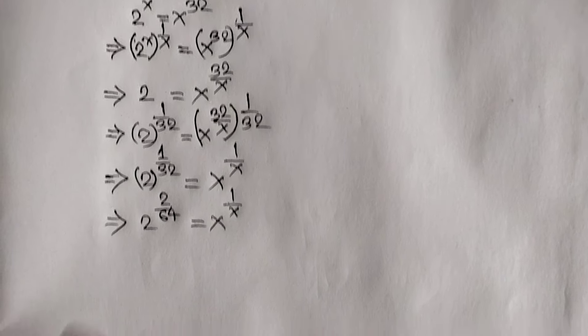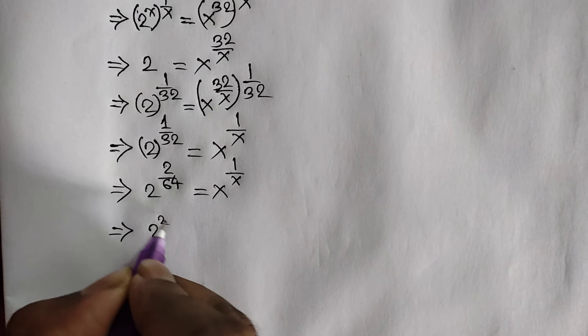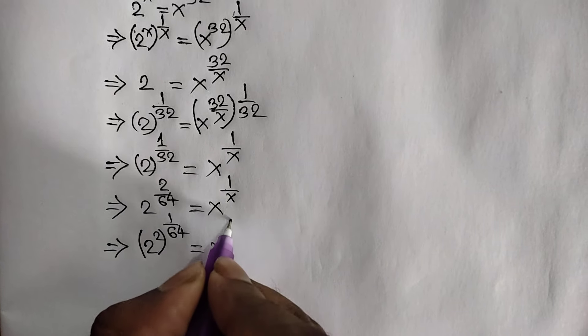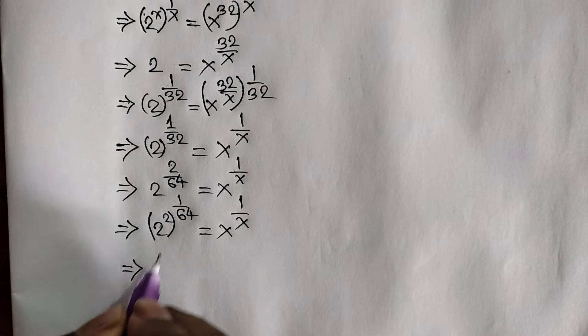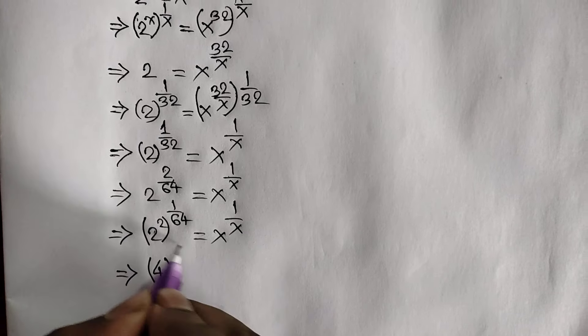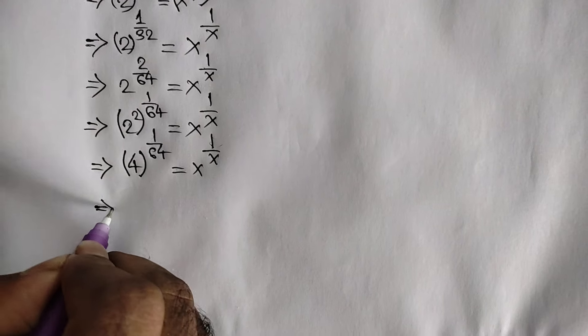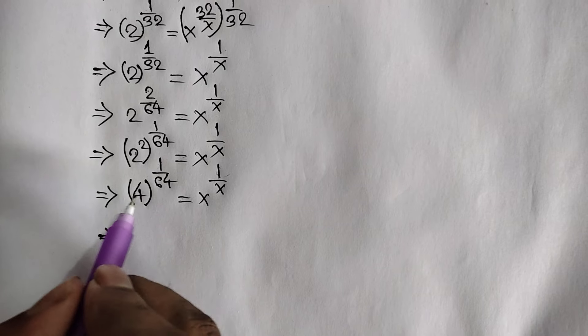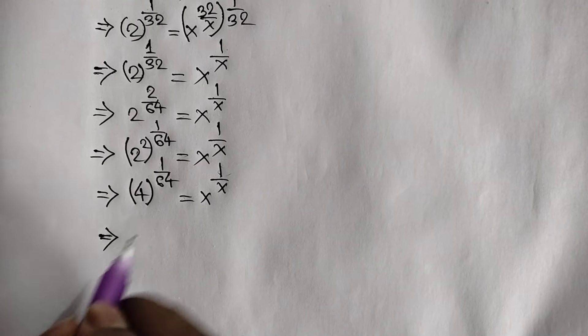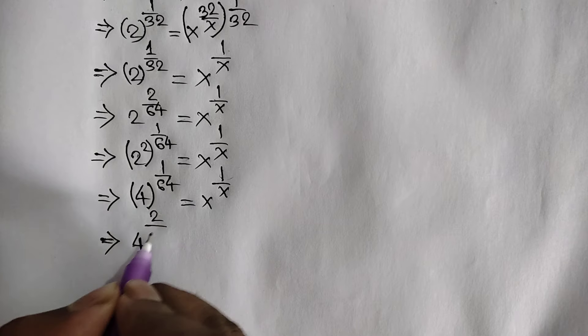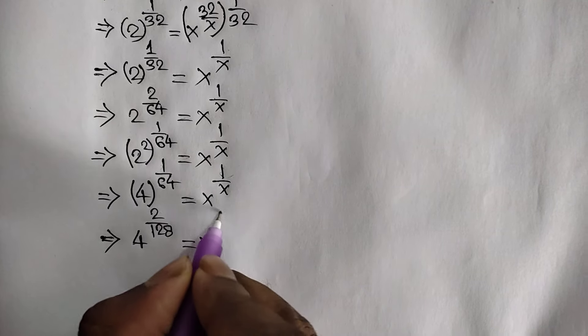Because 2 over 64 is the same as 1 over 32, this is equal to x to the power 1 over x. Here we can write 2 squared, that is 2 to the power 1 over 64, is equal to x to the power 1 over x. 2 squared is equal to 4, so 4 to the power 1 over 64 is equal to x to the power 1 over x. Then multiplying numerator and denominator by 2, we get 4 to the power 2 over 128 is equal to x to the power 1 over x.